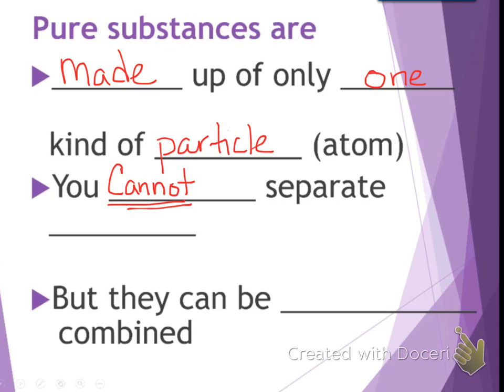Again, you cannot separate elements. They are what they are. But they can be chemically combined, which is what I just told you. Carbon is always carbon. Oxygen is always oxygen. You can't break them down any lower. You can chemically combine them and get carbon dioxide. But you can't make them any lower or any more simple when they are carbon by itself and oxygen by itself.